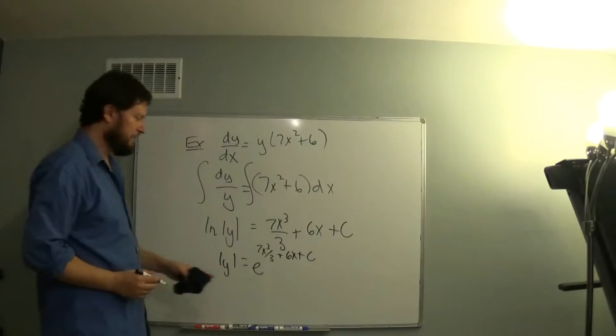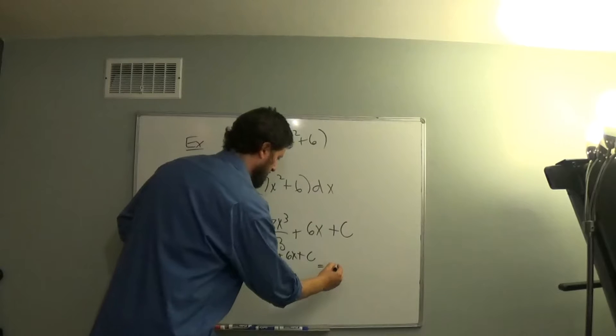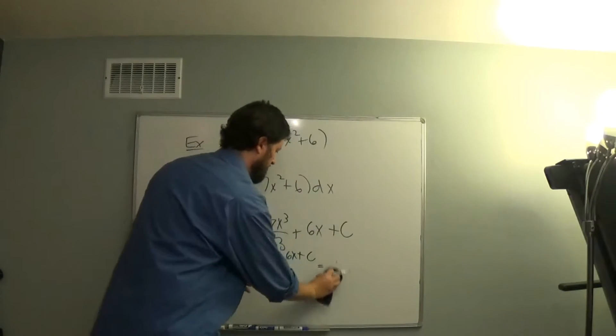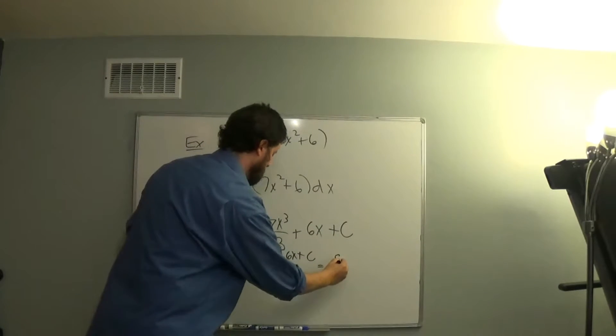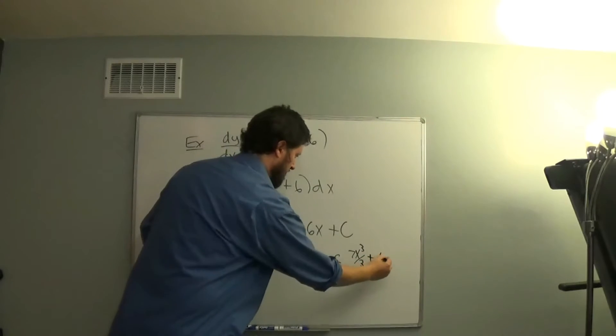As we've seen in previous examples, we can separate the c out. Let's write it like this: e to the c times e to the 7x cubed over 3 plus 6x.